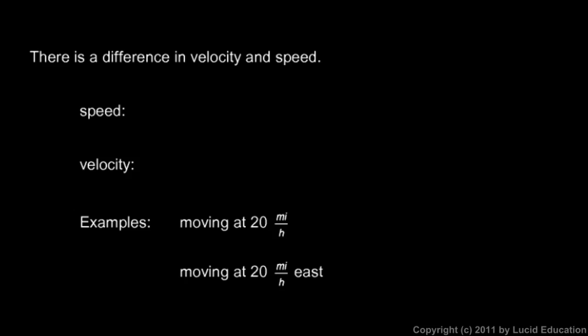Speed is simply how fast you're going, or how fast something is moving. That's an object's speed. An object's velocity tells us how fast it's going and in what direction.